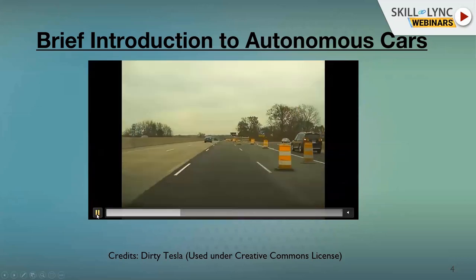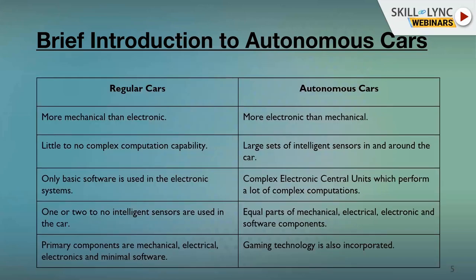Let's see the difference between a regular car and an autonomous car. Your regular car is generally more mechanical than electronic — regular cars are probably about 70 to 80 percent mechanical. That has shifted in autonomous cars, where you have almost 50 percent electronics. You have multiple sensors for every single part of the car — sensors to know the health of the car and sensors that see the world and gather information. In regular cars there was very little computation capability, but in autonomous cars you need computation capability.